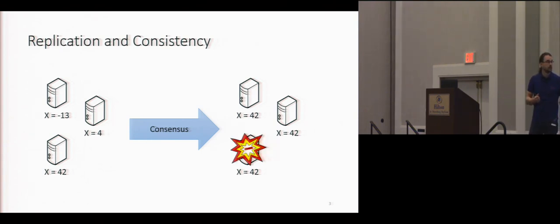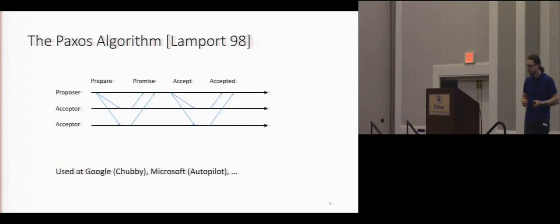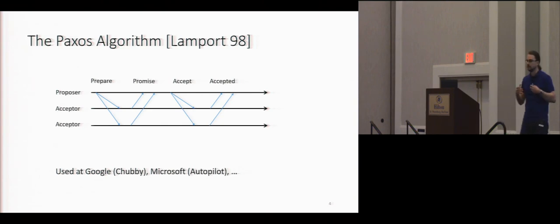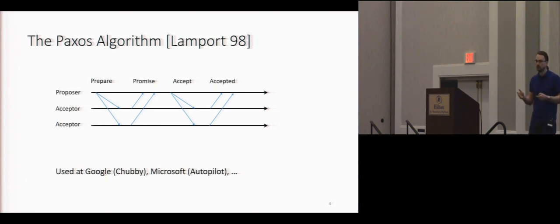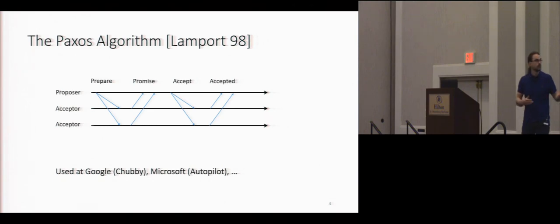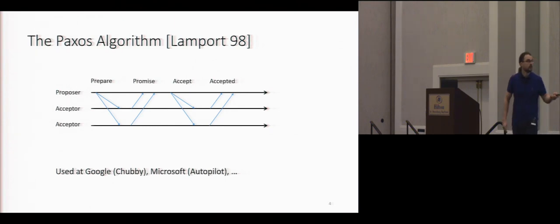However, those algorithms tend to be known to be complicated to implement, because they have to be correct also in the presence of crashes, faults, network partitions, and so on. Let me give you a flavor of what a consensus algorithm looks like. So let's say you are the proposer — you want to agree on what should be the next request that the system processes. You cannot simply send the request to the other machines, because for instance you might crash before sending it to all of them. So you need to execute a more complex protocol. In the first phase — the prepare and promise phase — you say to the other machines: I want to process a new request. The other machines promise they will accept your request.